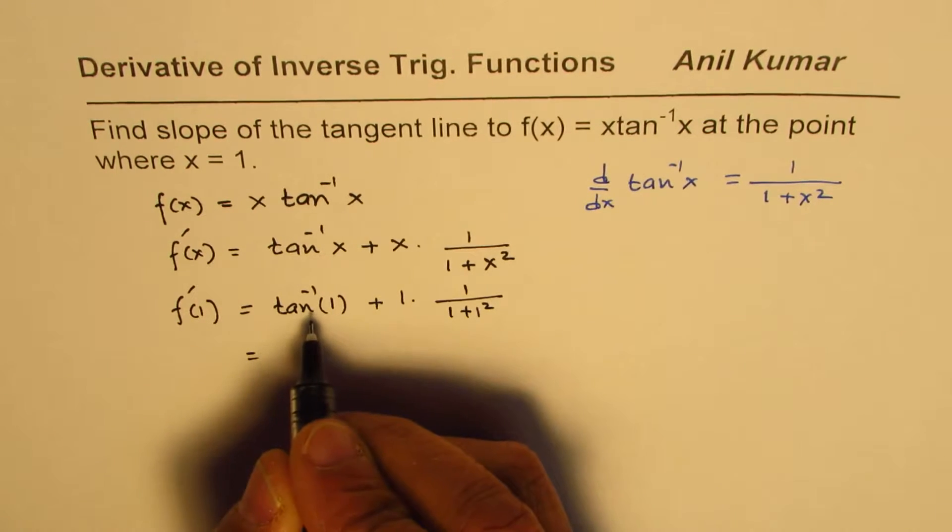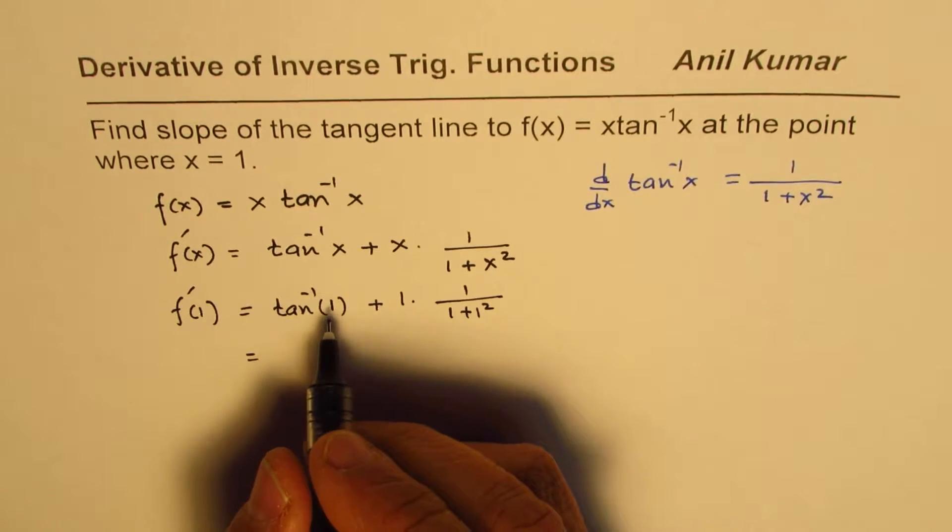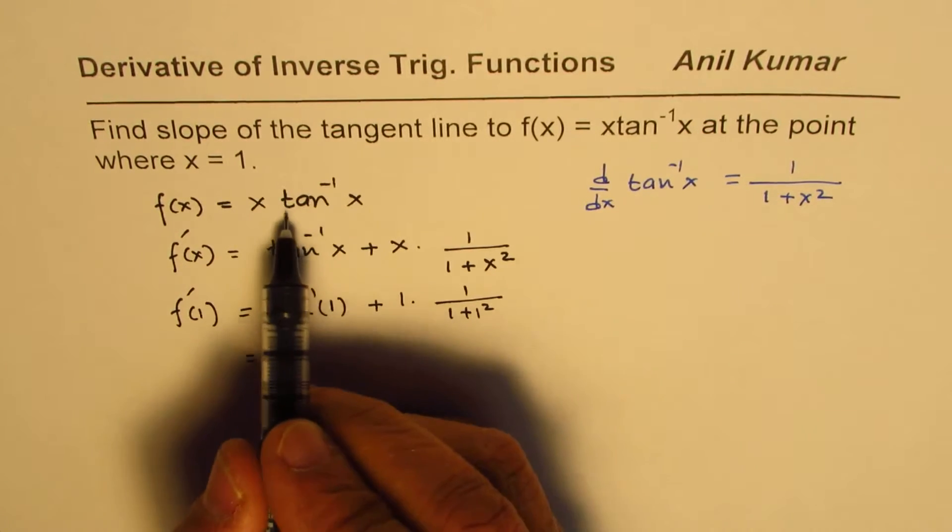Now, what is tan⁻¹(1)? Tan⁻¹(1) is π/4. You should remember this.